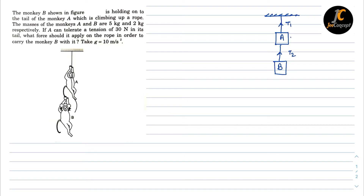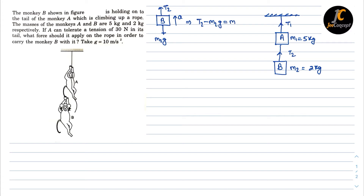The mass of monkey A is M1 = 5 kg and M2 = 2 kg. For the free body diagram of B: the weight M2g acts downward and tension T2 acts upward. With acceleration a upward, the equation of motion becomes T2 minus M2g equals M2a. This is equation number one.